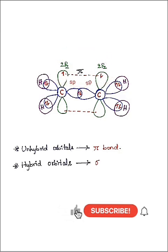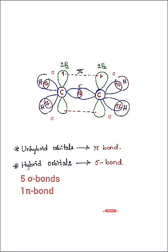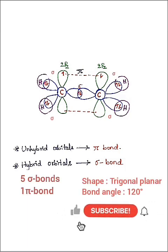Thus ethylene contains five sigma bonds and one pi bond. Finally, the shape of ethylene is trigonal planar.